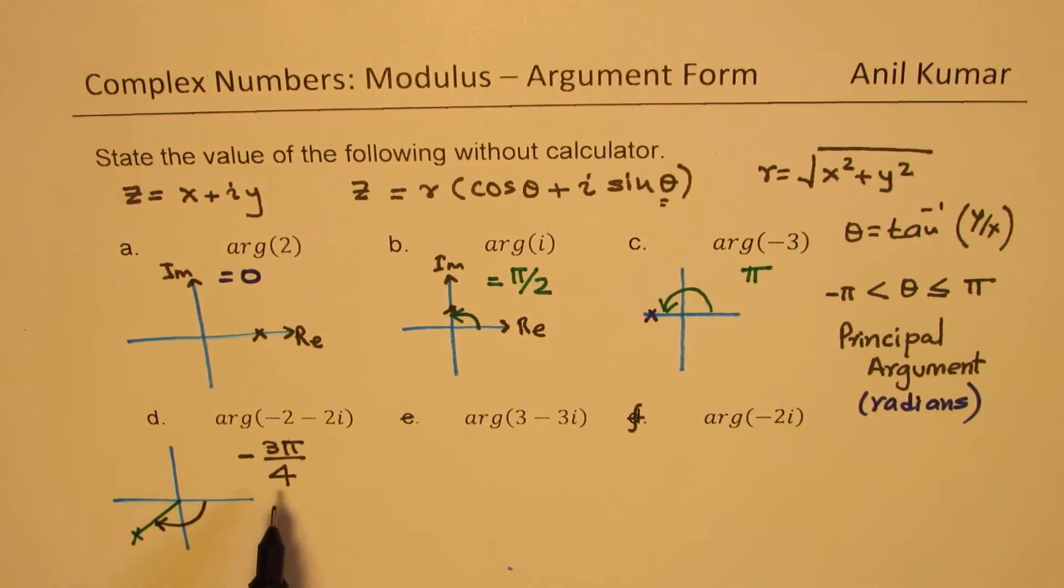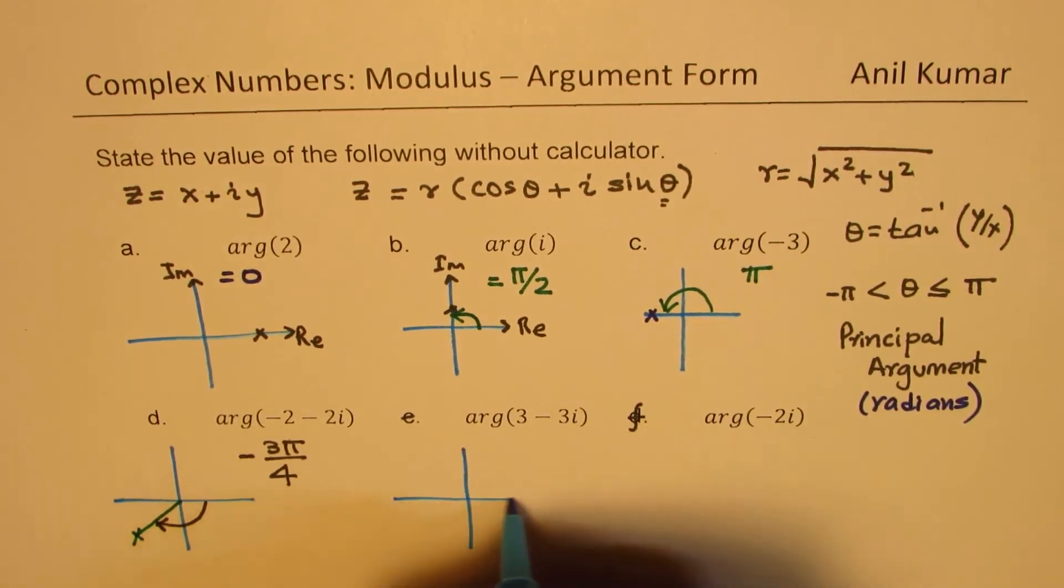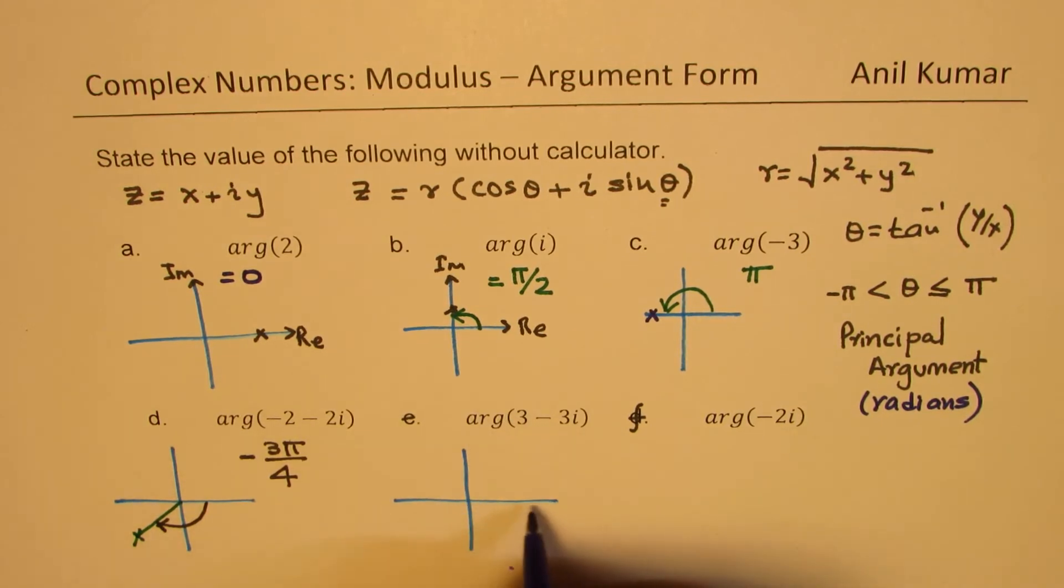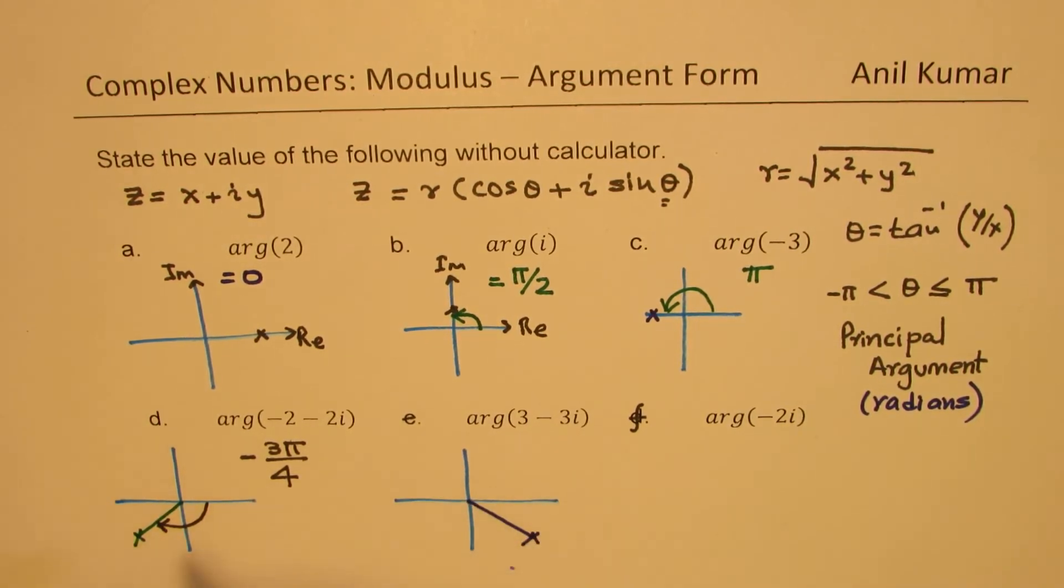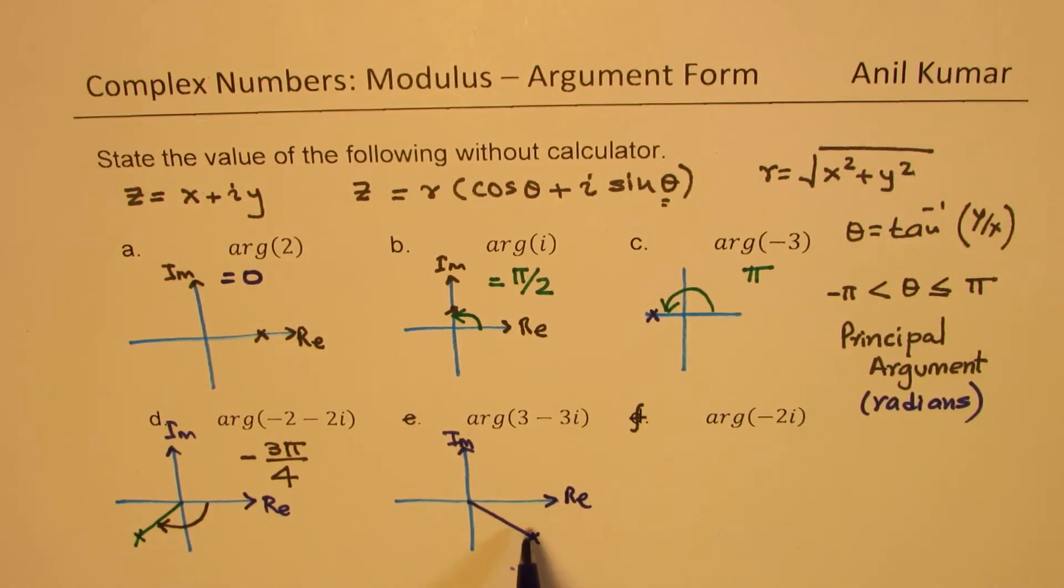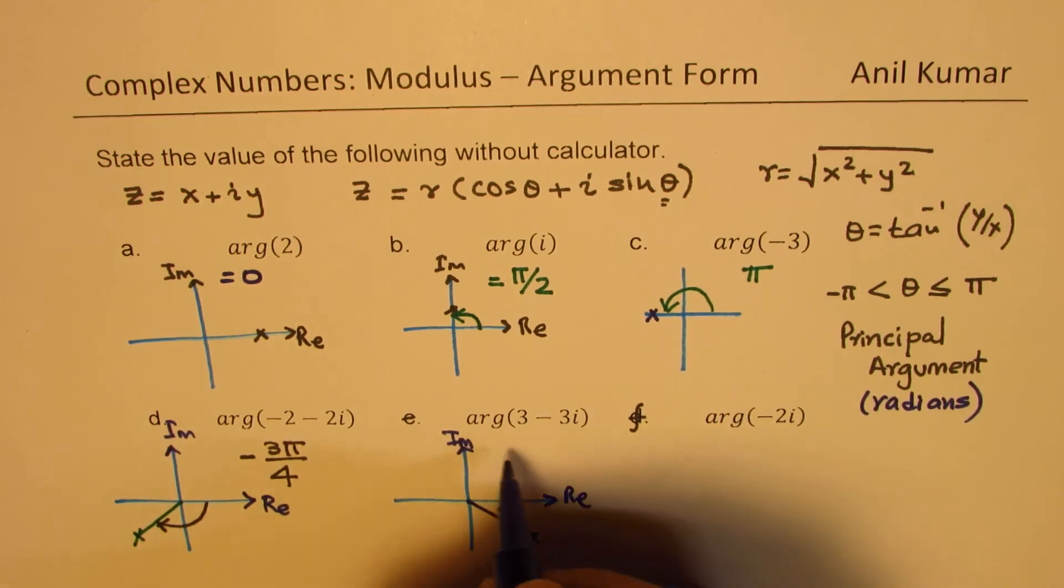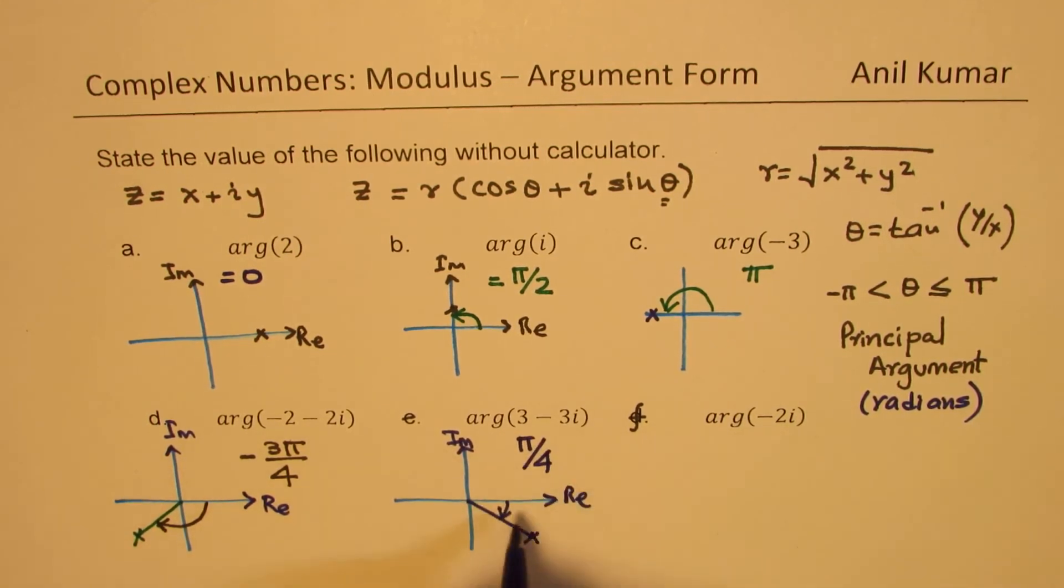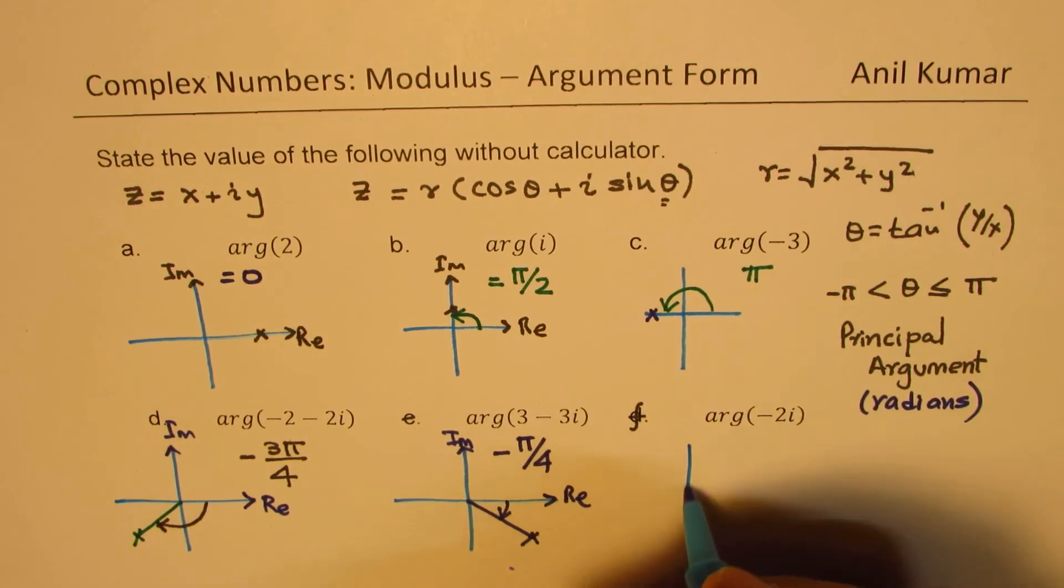We'll see that in the next video. Now here we have argument 3 minus 3i. 3 minus 3i means we are here. So I am not labeling them. This is real for us and that is imaginary in all these diagrams. So here the angle is right there, the negative angle. So both are same. So we have tan of pi by 4 is the answer and going clockwise means minus pi by 4. So that should be your answer to the question.